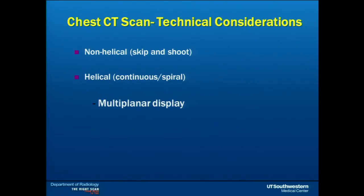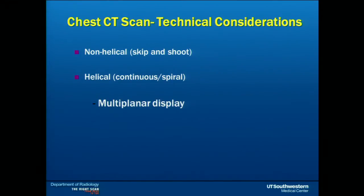The advantage of helical scan over non-helical skip-and-shoot is that it is a faster scan. You can get the entire volume of the lung in a single breath hold. It has less artifacts in terms of breathing and motion, and you can do multi-planar displays from the axial images — reconstructing sagittal and coronal images — and post-processing of the raw data to get beautiful 2D and three-dimensional reformatted images.